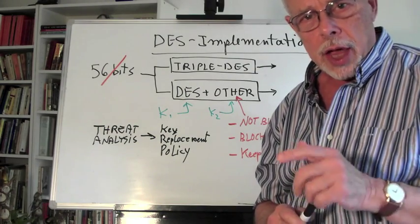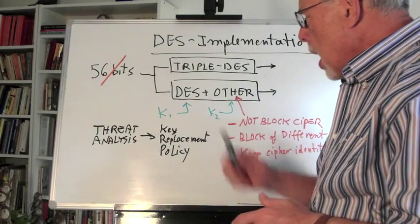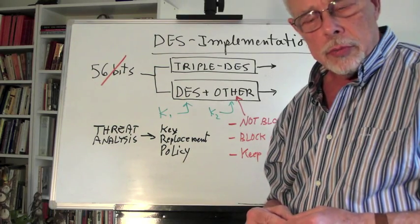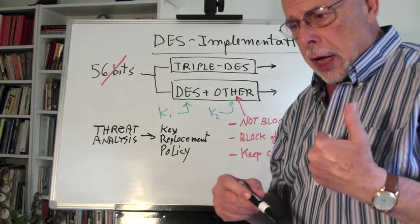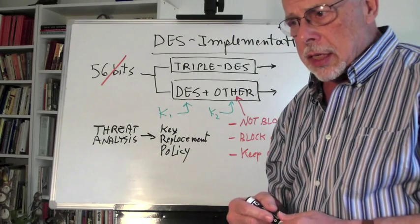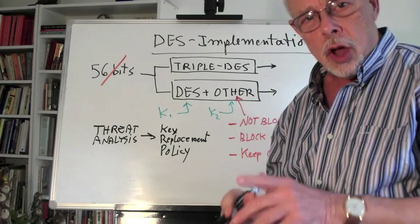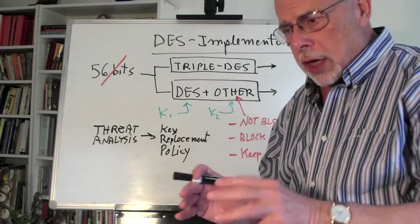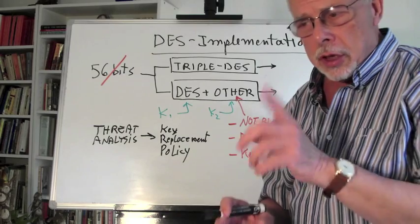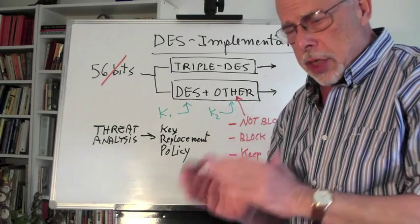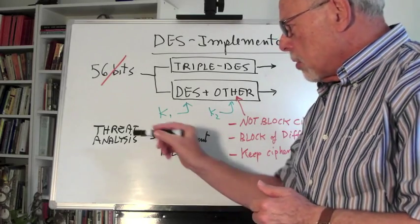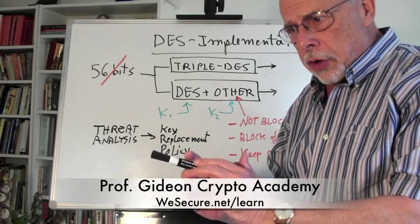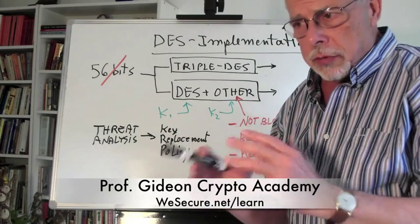If you can, keep the identity of the other cipher undisclosed, making it more difficult for the hacker to crack through. The other aspect is the key replacement procedure. This has to be a product of a threat analysis. Often times people skip it and run into implementing things — not a good idea.